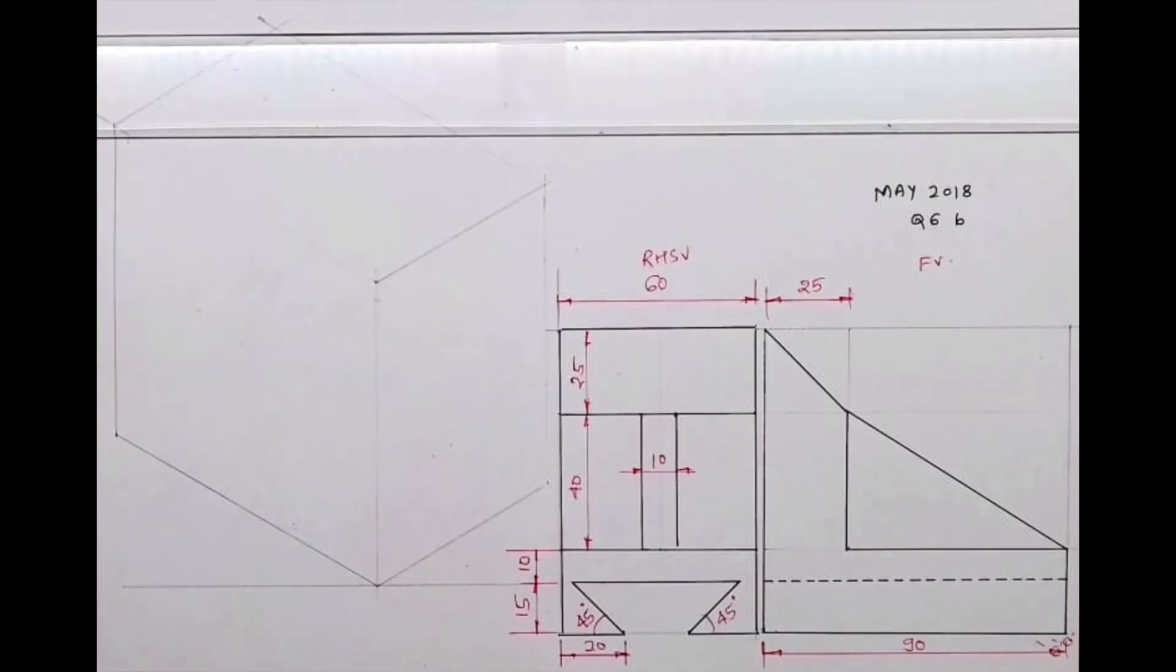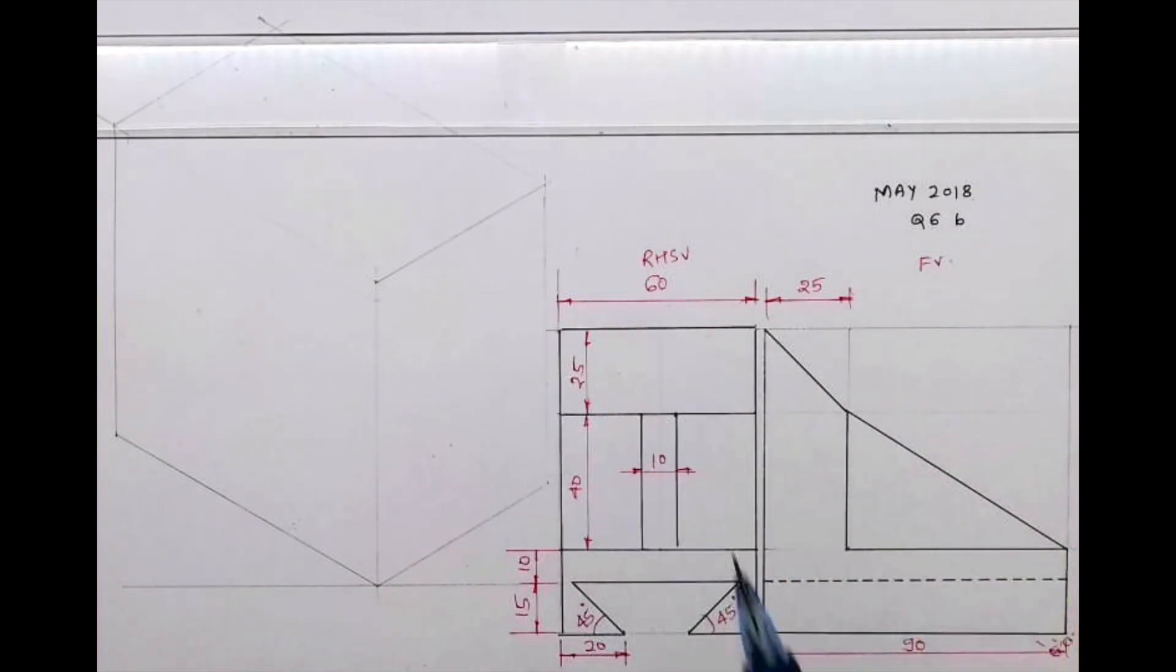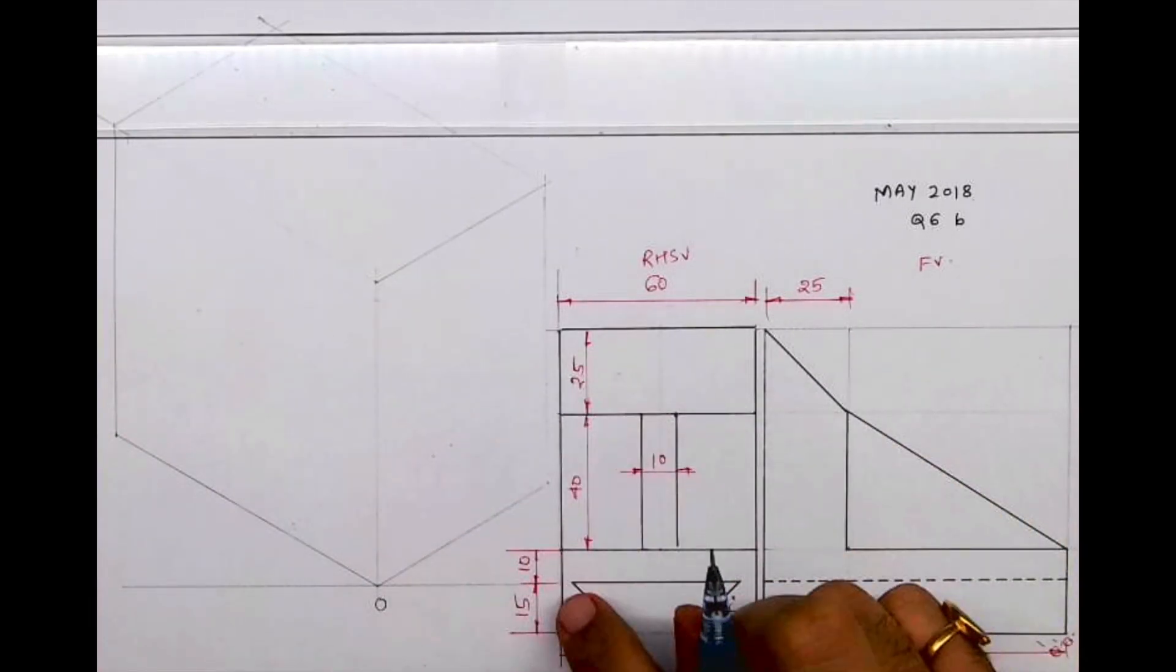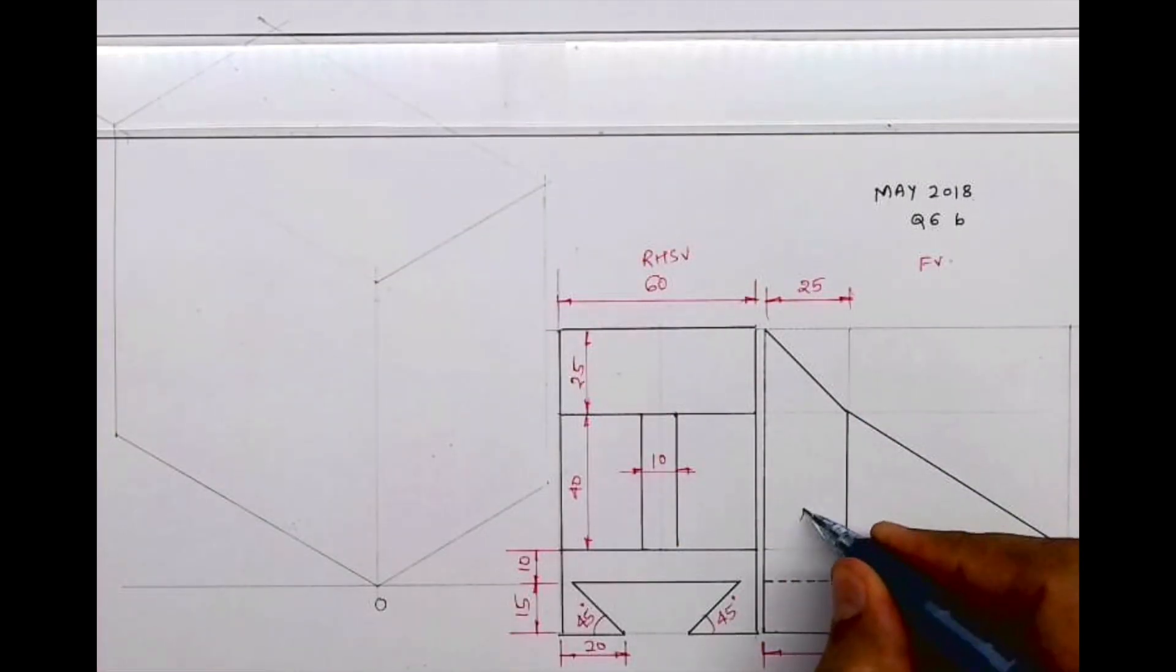Welcome to technical drawing. Today we'll do this problem which is an engineering drawing from MHTCET 2018 6B. Front view and side view are given. O is here, O left side is 90 and right side is 60, and height is 90. So we'll draw the box first. Then if you see, there are two parts, part 1 and 2.